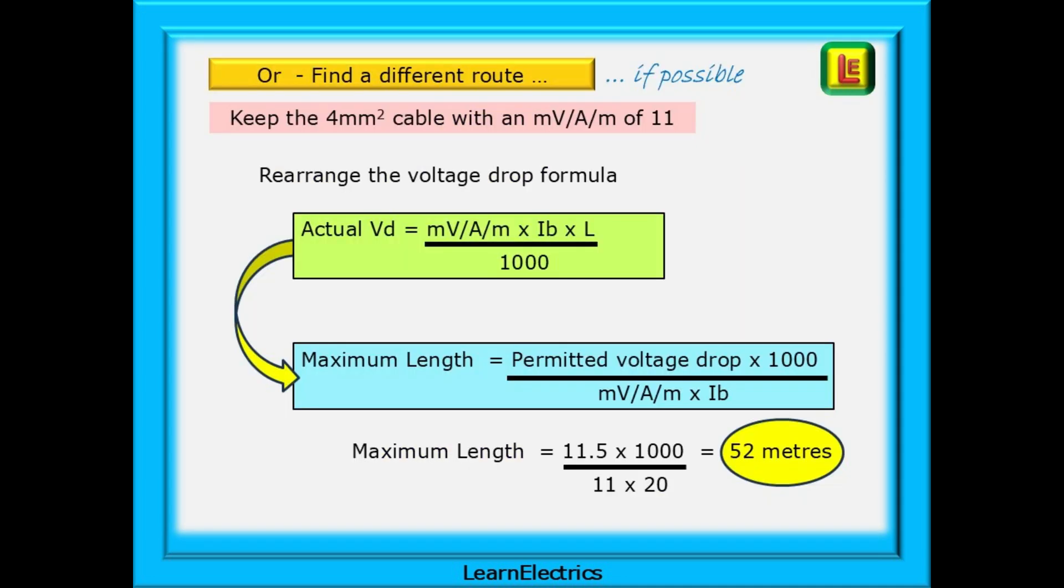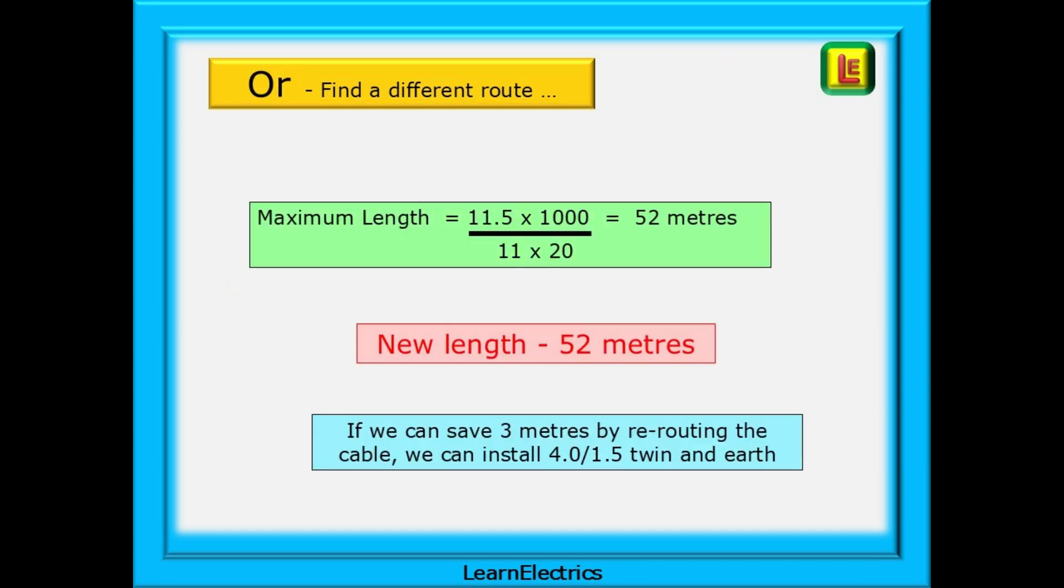Or we could keep the 4mm cable and try to find a shorter route that is still acceptable. To do this, we need to rearrange the voltage drop formula to make the maximum length of the subject. We've done this for you as shown in the blue box. The maximum length is found by multiplying the maximum permitted voltage drop by 1000 and then dividing this by the millivolts per amp per metre and the design current IB. Putting the numbers into the calculation as shown, we have an answer of 52 metres. So, the new length is 52 metres compared to the previous 55 metres. If we don't need 55 metres, then don't use it. If we can save 3 metres by re-routing the cable, we can still install 4mm by 1.5mm twin and earth.